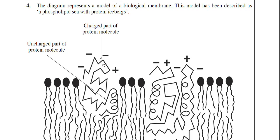We're up to question 4 now in the June 2009 BY-1 paper. Question 4 is really a couple of topics in one question. It's about biological membranes or the cell membrane, but later on it also asks about protein structure as well, which is pretty logical because there are proteins within the cell membrane.